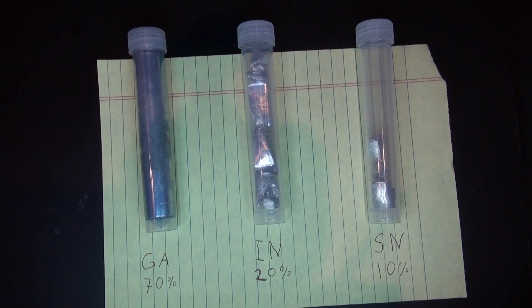To create galinstan, you will need to combine these three chemical elements to form a eutectic alloy, which is a metal that melts at a low temperature, such as 11 degrees Celsius or 51.8 degrees Fahrenheit. And what you'll need is 70% gallium, 20% indium, and 10% tin.